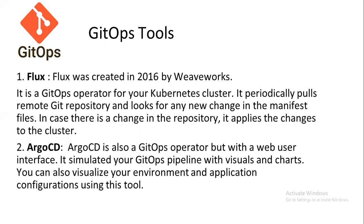Let's look at GitOps tools. First is Flux, created in 2016. Flux is a GitOps operator for Kubernetes clusters. It periodically pulls a remote Git repository and looks for any new changes in the manifest files. If there is a change in the repository, it applies those changes to the cluster.